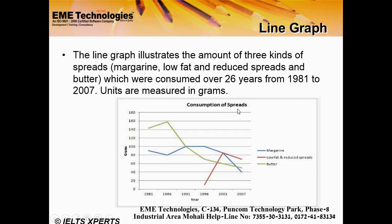In 1989, butter was the most consumed spread. The amount of margarine was also significant. Low-fat and reduced spreads became the most consumed by 1996 — this is a striking point. By 2007, low-fat and reduced spreads remained the most consumed, while the amount of butter had declined. This is a proper explanation.